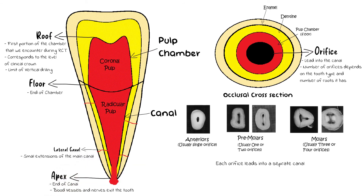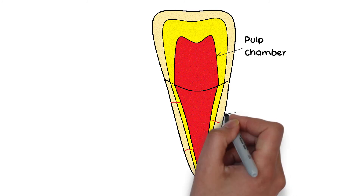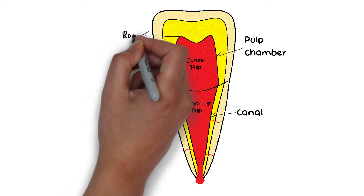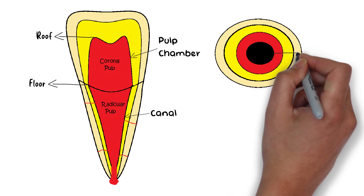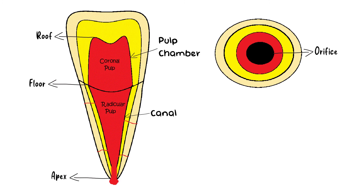To recap the entire basic anatomy of the pulp: we have the chamber corresponding to the crown portion and the canal corresponding to the root portion. The pulp inside the chamber is the coronal pulp, while the pulp inside the canal is the radicular pulp. The chamber has a roof and a floor; on the floor are the orifices that open into separate canals. The terminating point of each canal, where blood vessels and nerves exit, is known as the apex. During root canal therapy, identification of all these features is very important as it may determine the success or failure of the endodontic therapy.